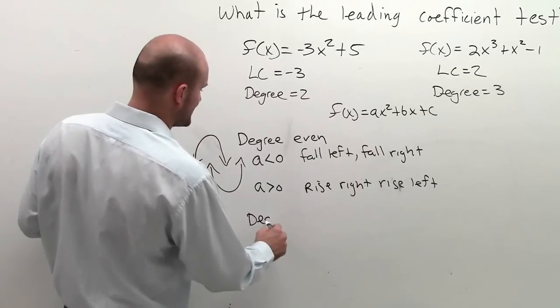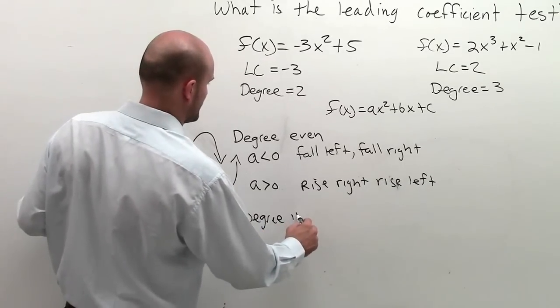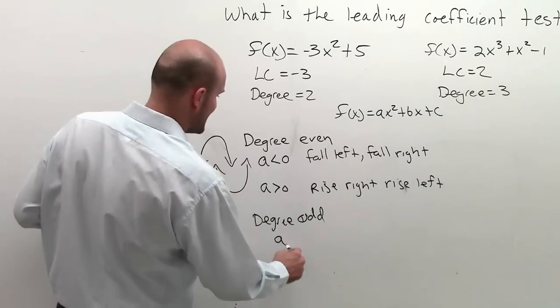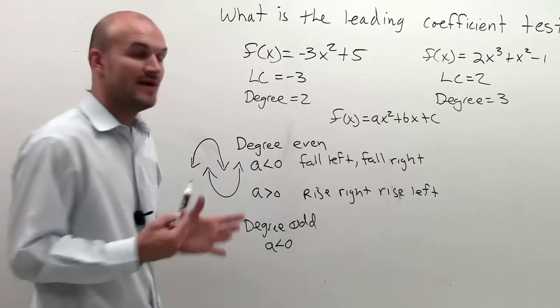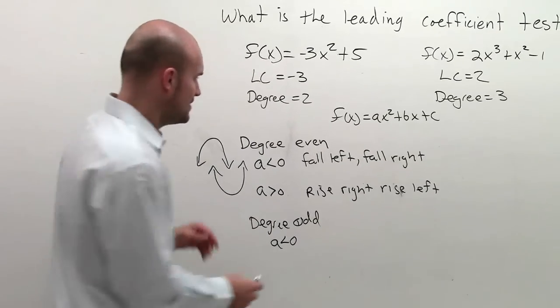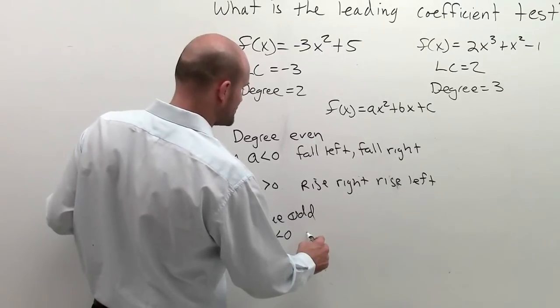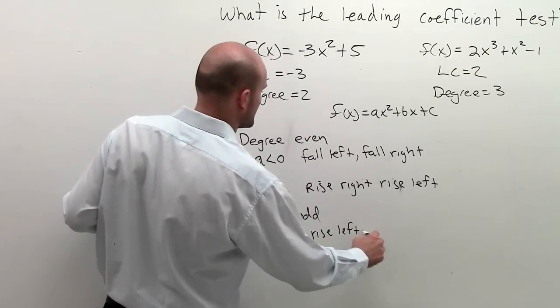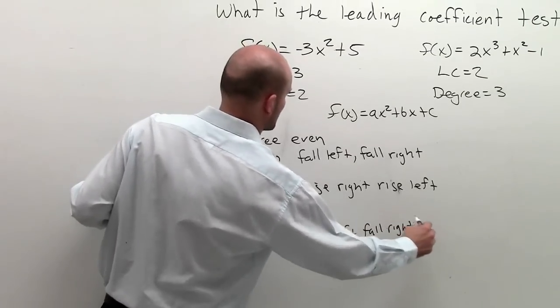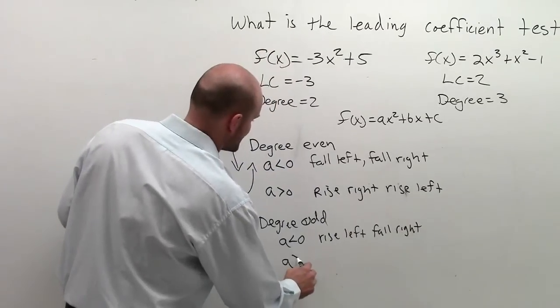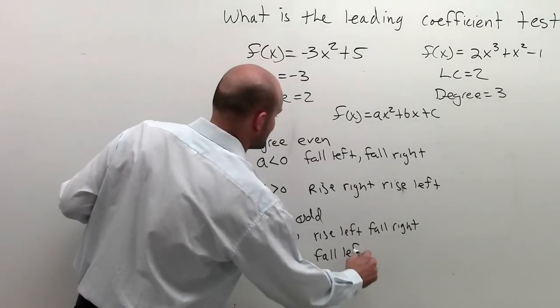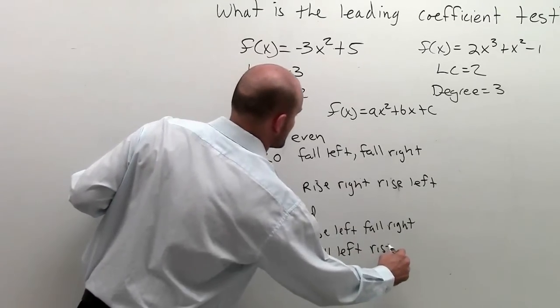Let's go and take a look if the degree is odd. So if the degree is odd and a is less than 0, then we're going to have a graph that's going to rise left and fall right. And if we have a graph where a is greater than 0, we're going to fall left and rise right.